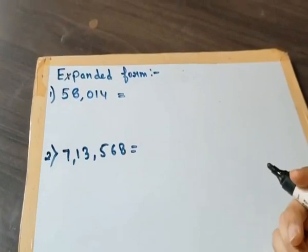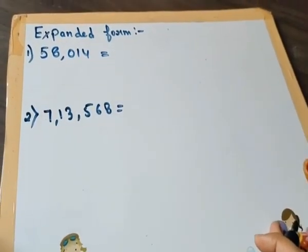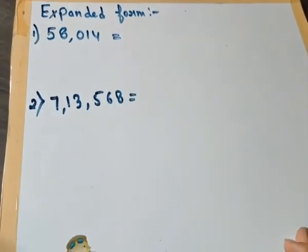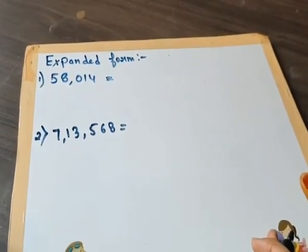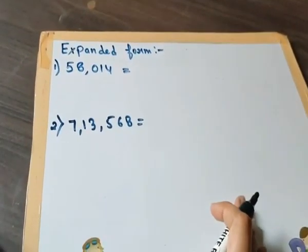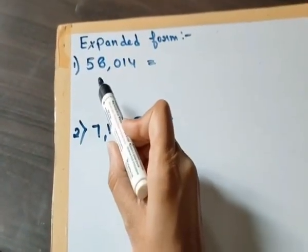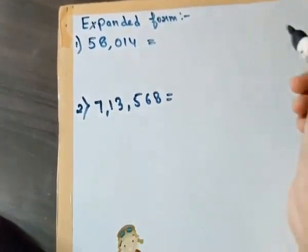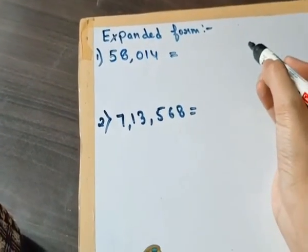Good morning students, our today's topic is expanded form. Expanded form is also called expanded notation, so don't get confused. If in your exam it comes as expanded form or expanded notation, both are the same thing. So now coming to the question, first is 58,014. So what we have to do is we have to just expand the number.